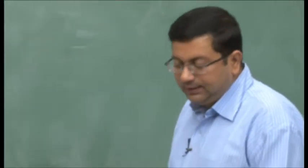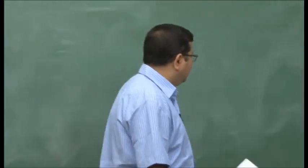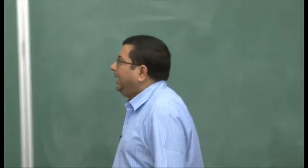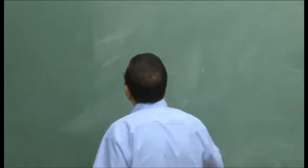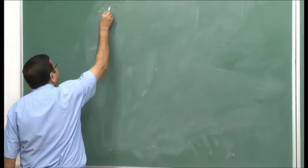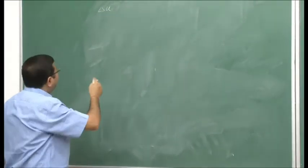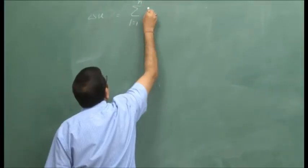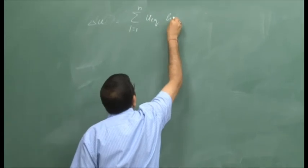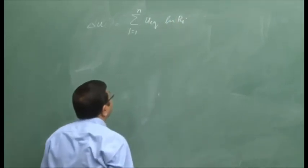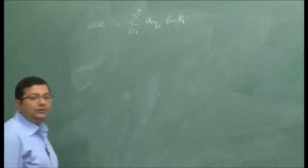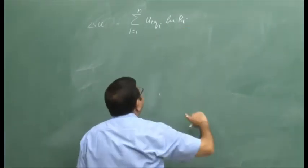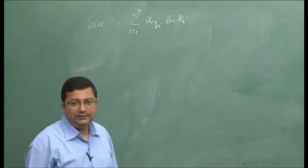In the last lecture, we were discussing multistage optimization. What we showed is that delta-u for an entire multistage rocket having n stages is given by this expression, where u_equivalent_i is the equivalent velocity for the i-th stage and r_i is the inverse of the mass ratio for the i-th stage.